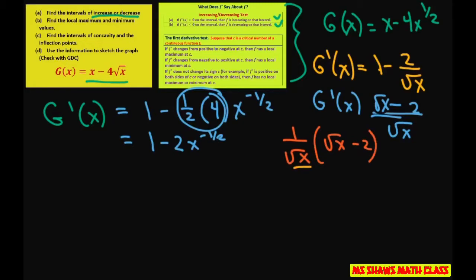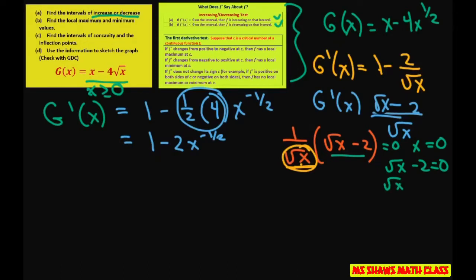That means we have undefined at x equals 0. And by the way, since we have the radical there, x cannot be less than 0 — it has to be greater than or equal to 0 for our domain. So we're going to check our critical values. Set the numerator to 0: square root of x minus 2 equals 0, so square root of x equals 2, square both sides, and we get x equals 4. So our two critical numbers are 0 and 4.